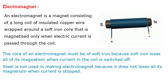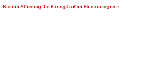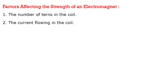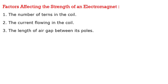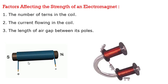The strength of an electromagnet depends on the number of turns of the coil — if we increase the number of turns the strength of the electromagnet increases. Secondly, if the current flowing in the coil is increased, then also the strength of the electromagnet increases. Thirdly, it depends on the length of the air gap between its poles. If we reduce the length of the air gap between the poles of the electromagnet then its strength increases.